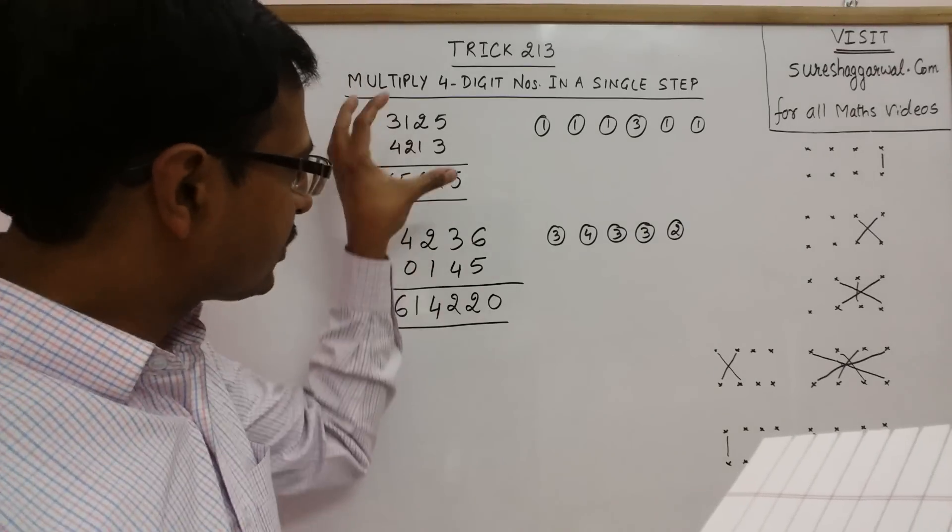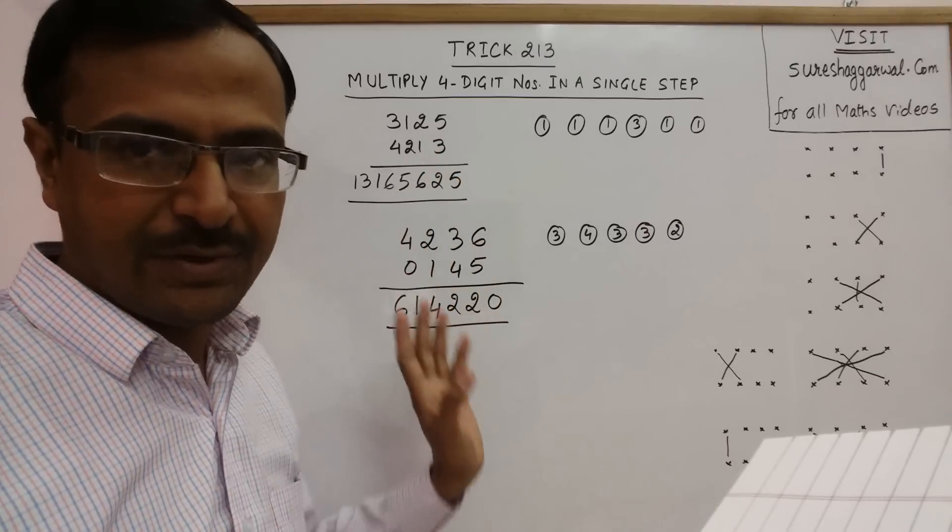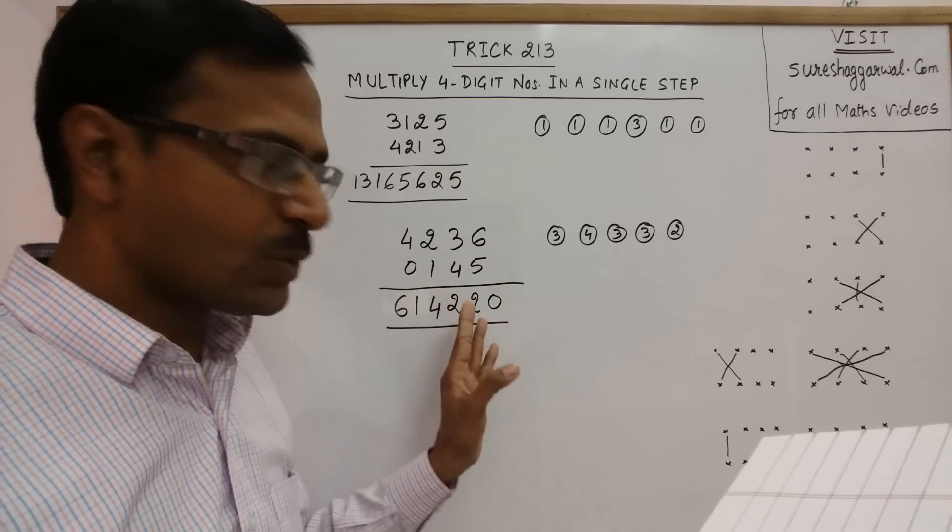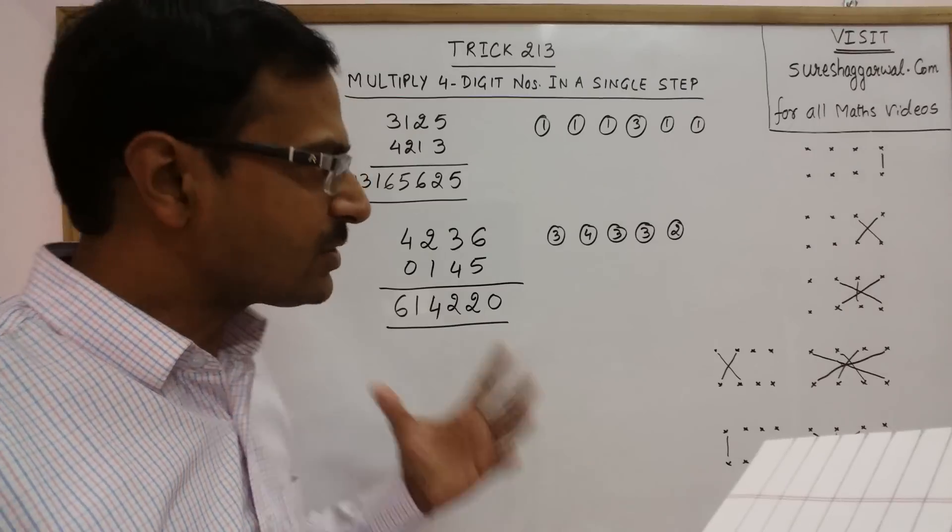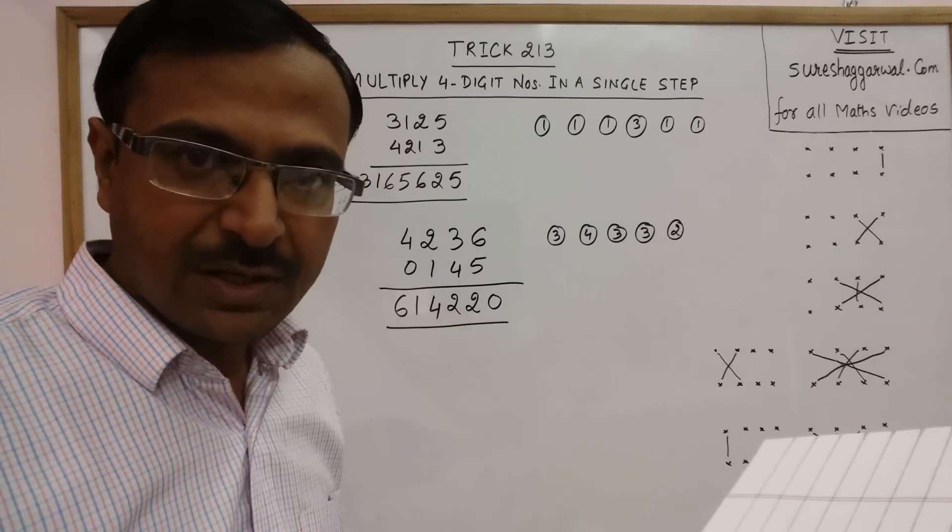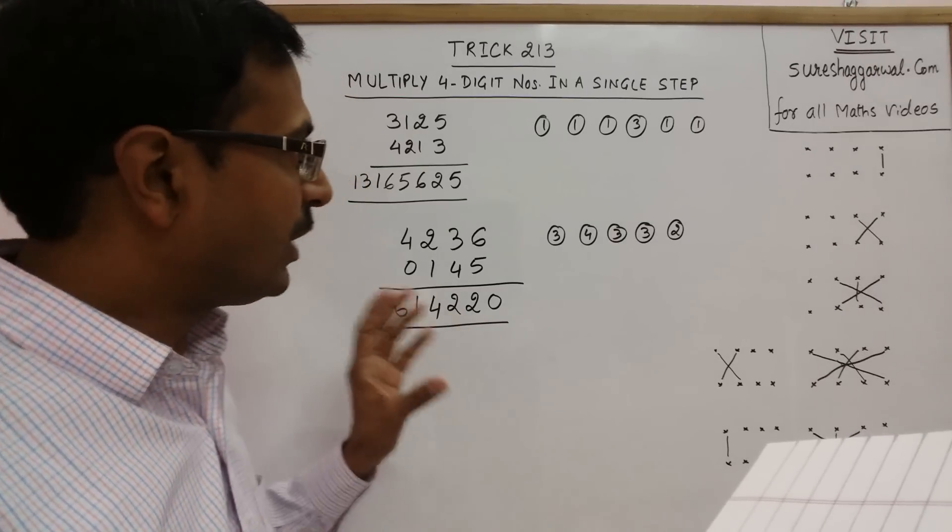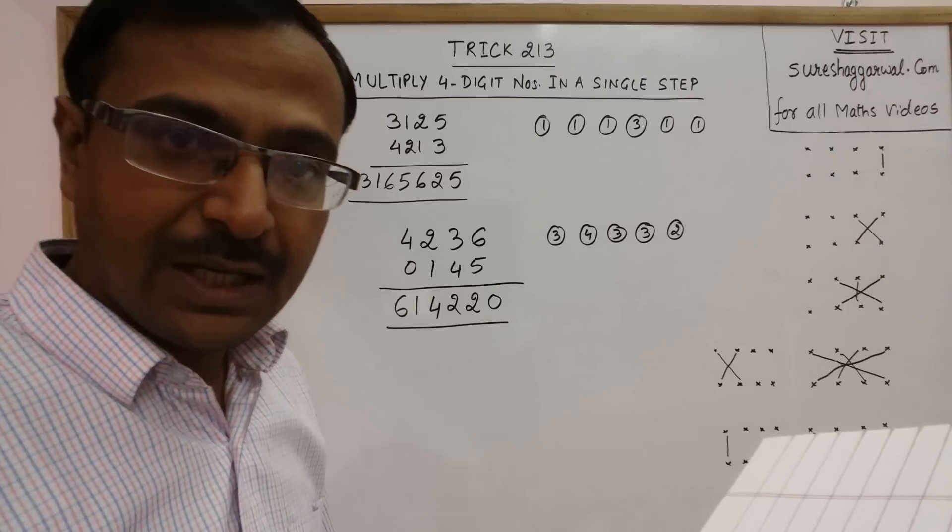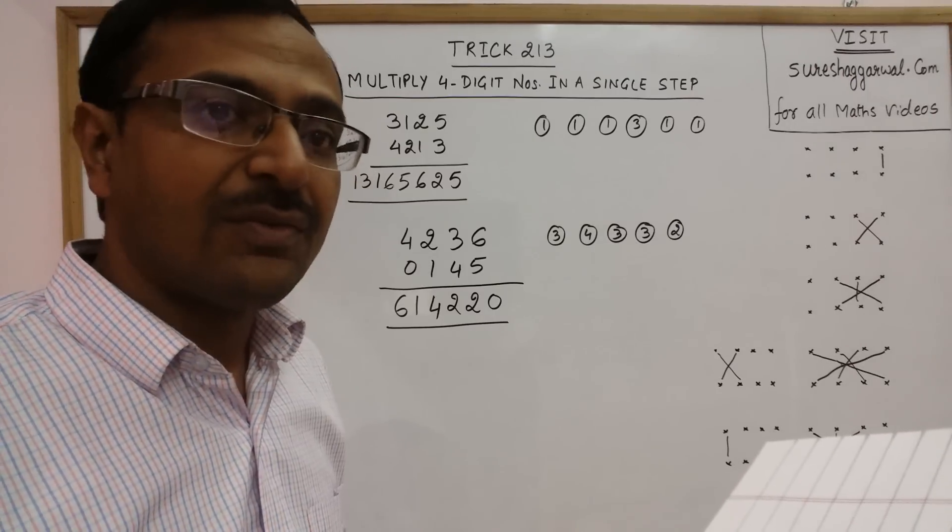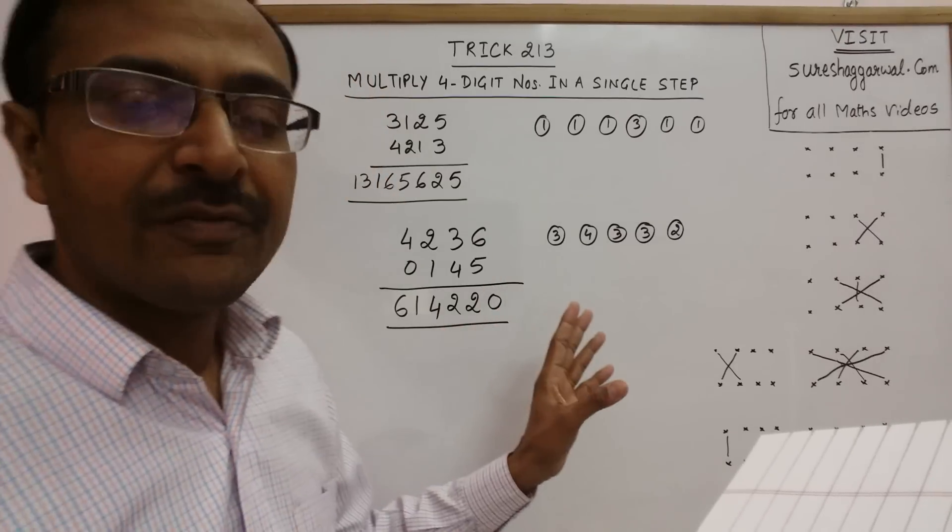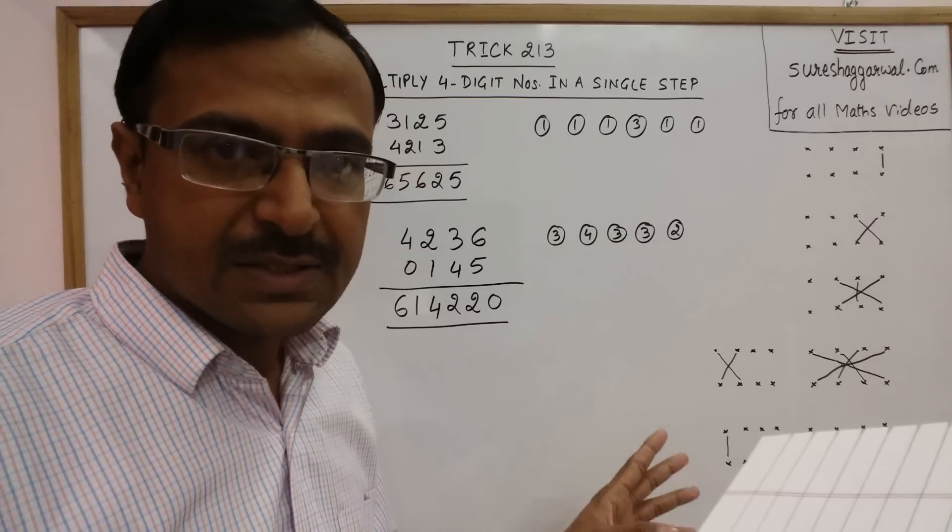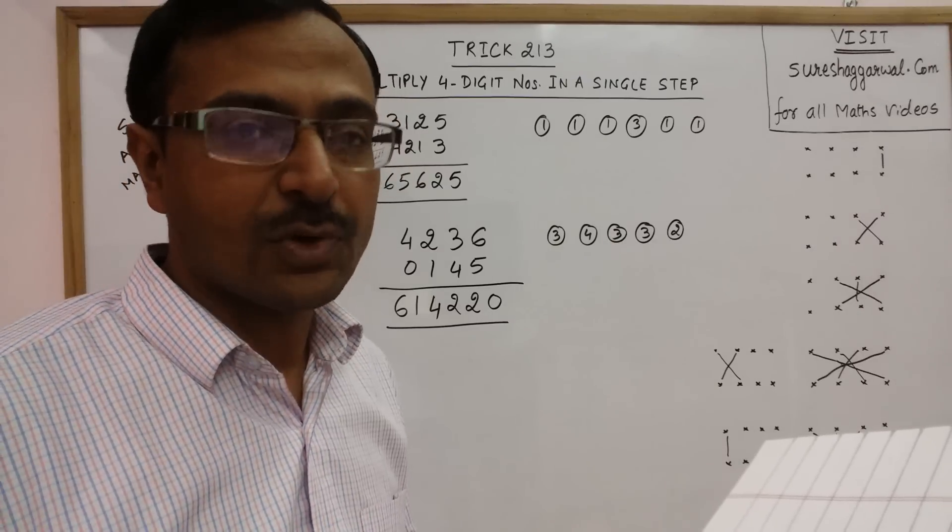Now see, once we have understood the method in the first example, we have applied this on this question a little bit more quicker. Within a practice of 10 to 15 minutes, you can master it and solve all multiplications of 4-digit in a matter of just 15 to 20 seconds only, whereas by traditional method you will consume at least 50 to 60 seconds for solving this.